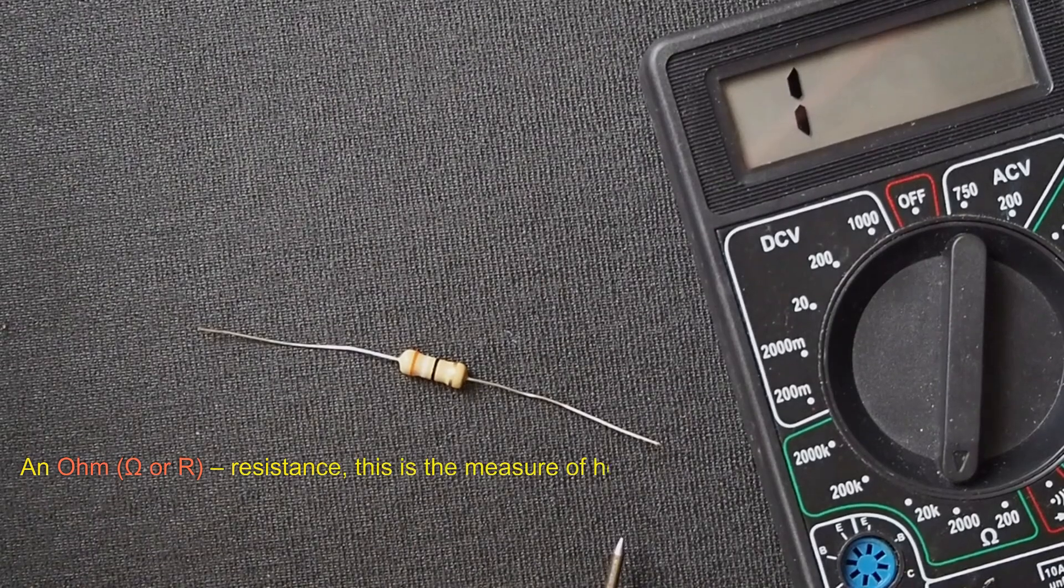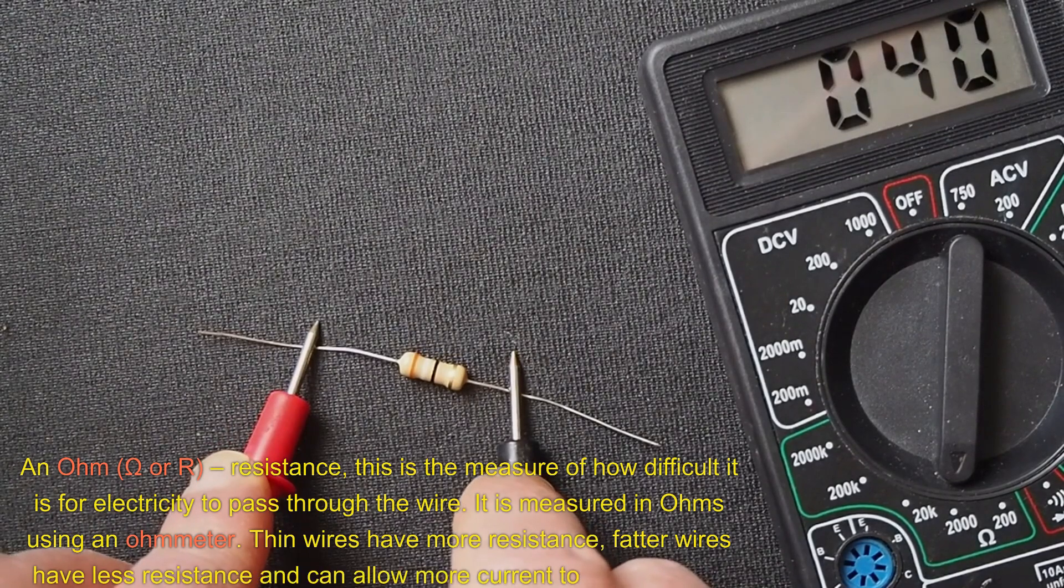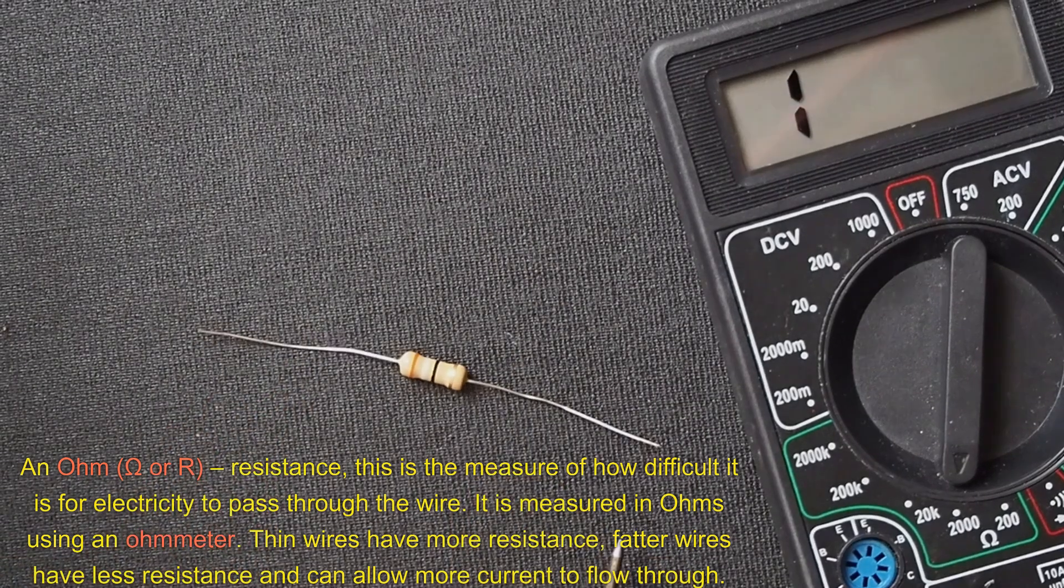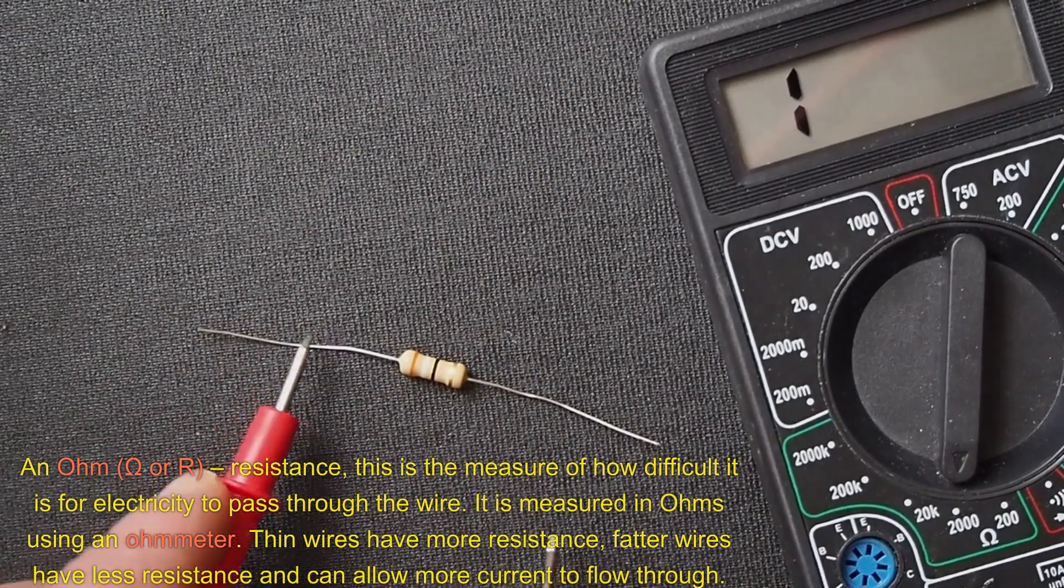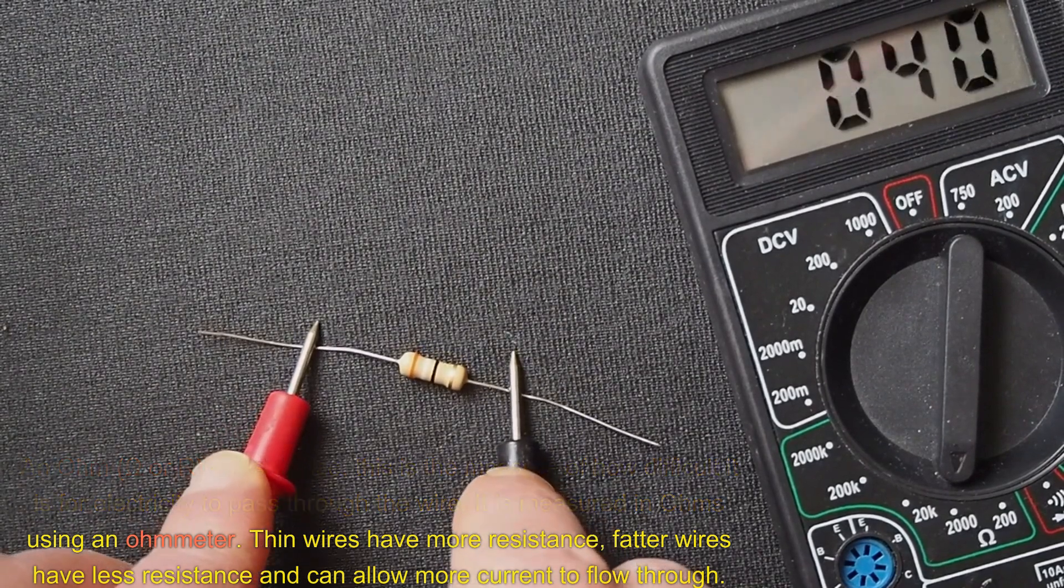An ohm (O or R), resistance. This is the measure of how difficult it is for electricity to pass through the wire. It's measured in ohms using an ohmmeter. Thin wires have more resistance. Fatter wires have less resistance and can allow more current to flow through.